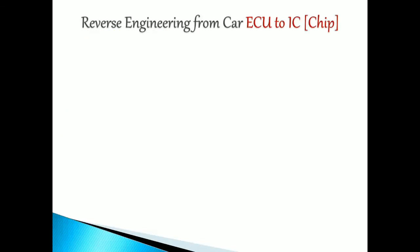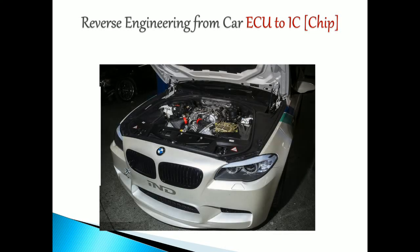First, let's look at reverse engineering from the car. This is a BMW, and in this car we have a number of ECUs. For an Indian high-end vehicle it might be in the range of 70 to 90 ECUs, and for developed countries like the US or Germany they might have around 110 or so. From all those ECUs, we are focusing on just one ECU.